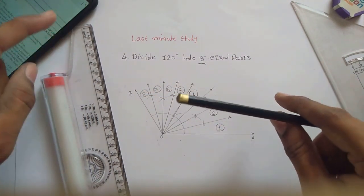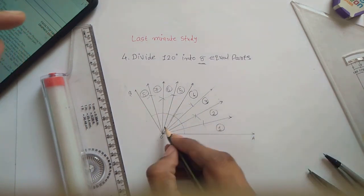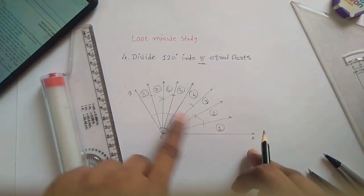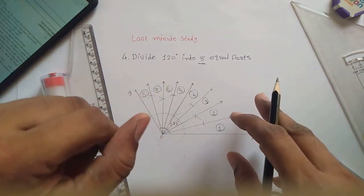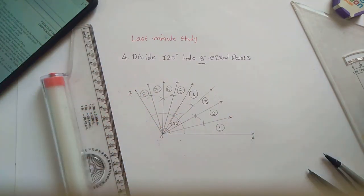We have successfully divided 120 degrees, this is 120 degrees, into eight equal parts by using this bisection method. Thank you.